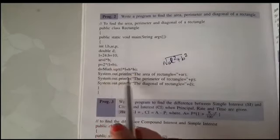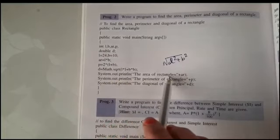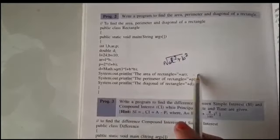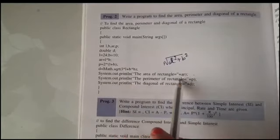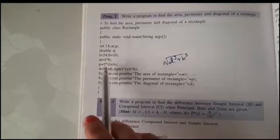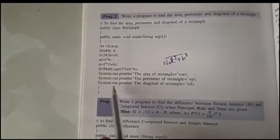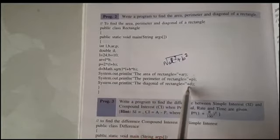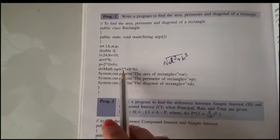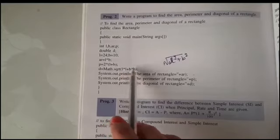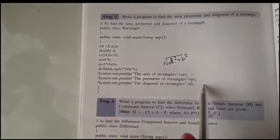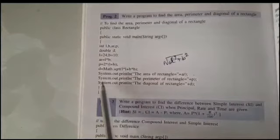Now we will print the values. System.out.println: the area of rectangle equals plus ar — here area will print, meaning 24 multiply 10, answer will be 240. System.out.println: the perimeter of rectangle is equal to plus p — meaning 2 multiply l plus b, which is 24 plus 10 equals 34, multiply by 2, answer will come. System.out.println: the diagonal of rectangle is equal to plus d — it will first compute l multiply l: 24 multiply 24, plus 10 multiply 10, then find the square root. Then we close 2 brackets.